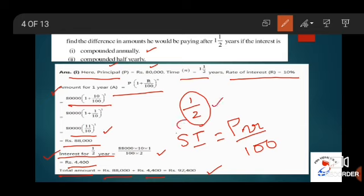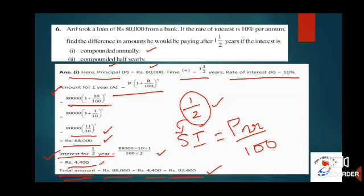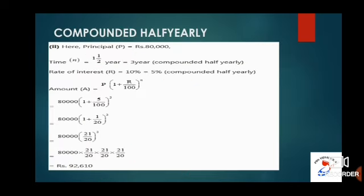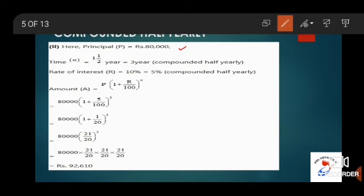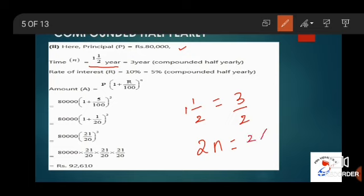We have done subdivision 1. Now moving to subdivision 2, which is compounded half yearly. The principal is again Rs. 80,000. Time period is 1.5 years — converting the mixed fraction, that is 3/2 years. For half yearly, n = 2n = 2 × 3/2 = 3. Rate of interest is 10% per annum; for half yearly, divide by 2, giving 5%.